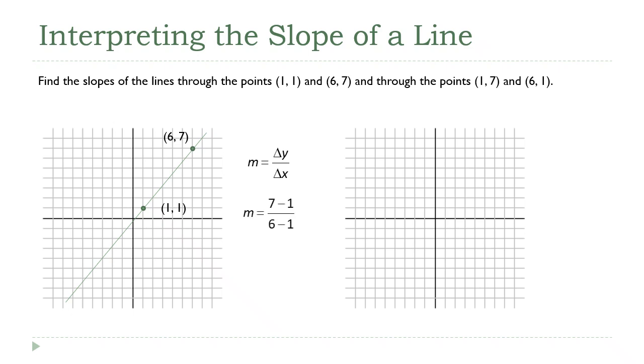Well, the y values are 7 and 1, and the x values are 6 and 1. So I'll put the difference of the y's on the top and the x's on the bottom. And now it's just a little arithmetic. 7 minus 1 is 6, and 6 minus 1 is 5. So the slope of that line is 6 fifths.